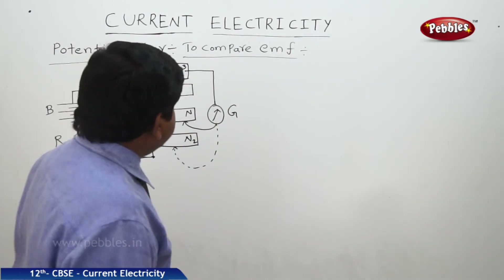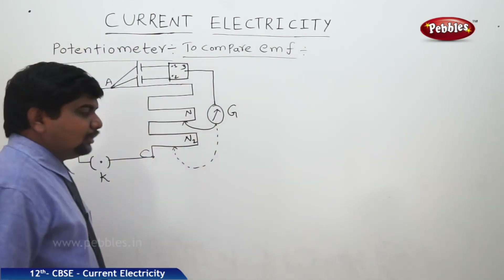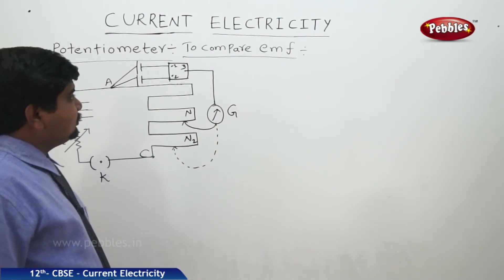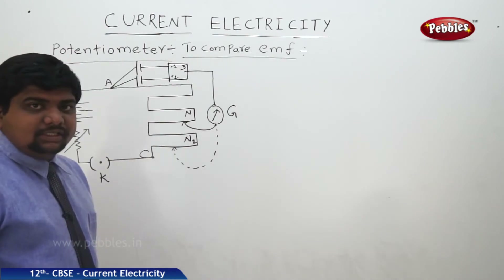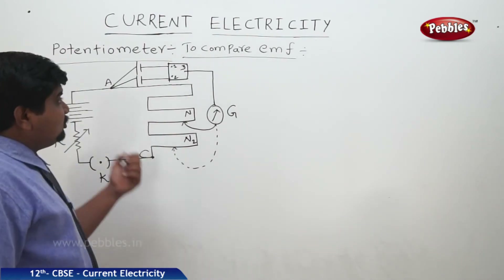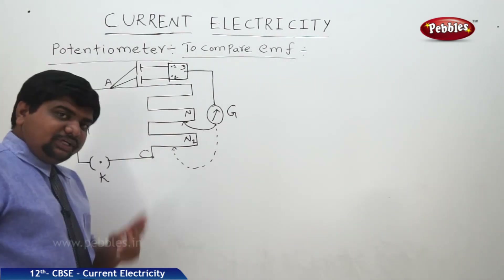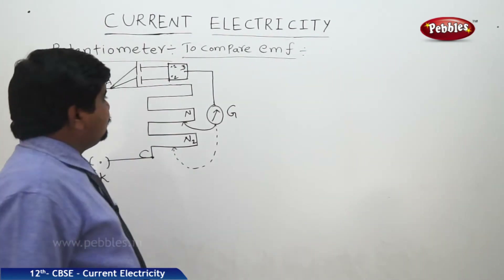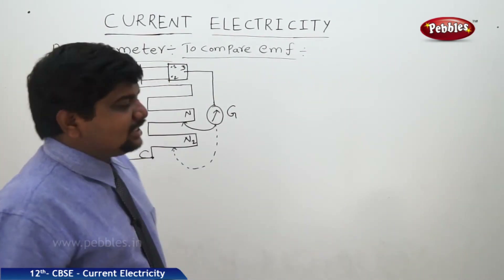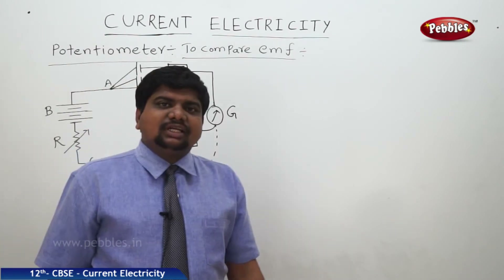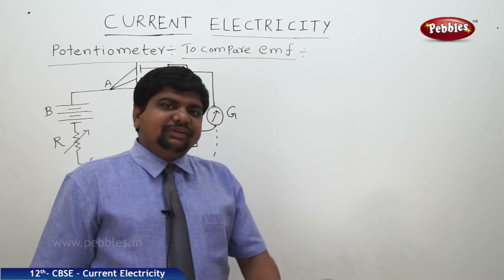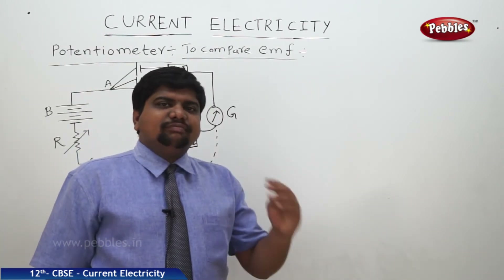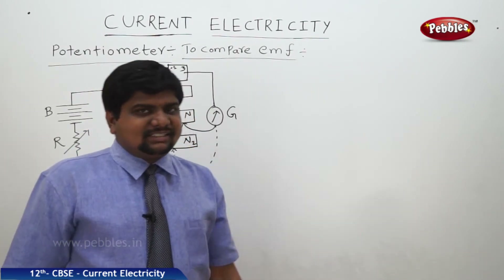This is one of the applications of Kirchhoff's laws, called the potentiometer. This potentiometer is useful in two ways: the first use is to compare the EMFs of cells, and the second use is to compare the internal resistances.